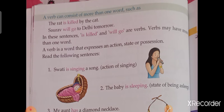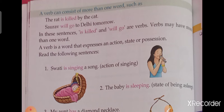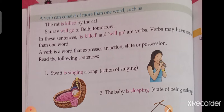Today I am going to teach you the verb. In the previous video, I have already taught you what is a verb. So at this time, I am going to repeat: what is a verb? A verb is an action word. It expresses the action done by the noun or pronoun in a sentence. Verb kya hai? Ek action word hai. It expresses the action done by the noun or pronoun in a sentence.